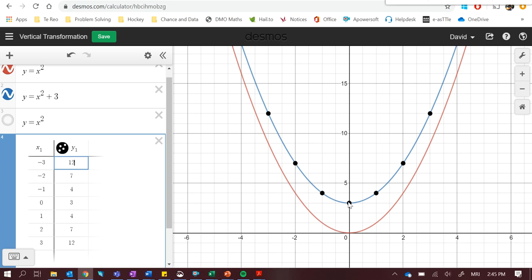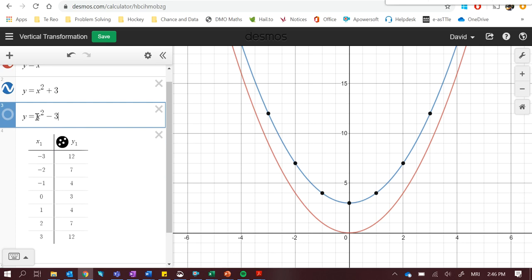This is what we call vertical transformation. You've shifted the parabola 3 spaces up, 3 values up. The opposite of shifting it 3 spaces up is going to be shifting it 3 spaces down. So let's have a look at what that would look like by writing this formula, by putting it into this formula here. So you can see what I've put in here is y equals x squared minus 3.